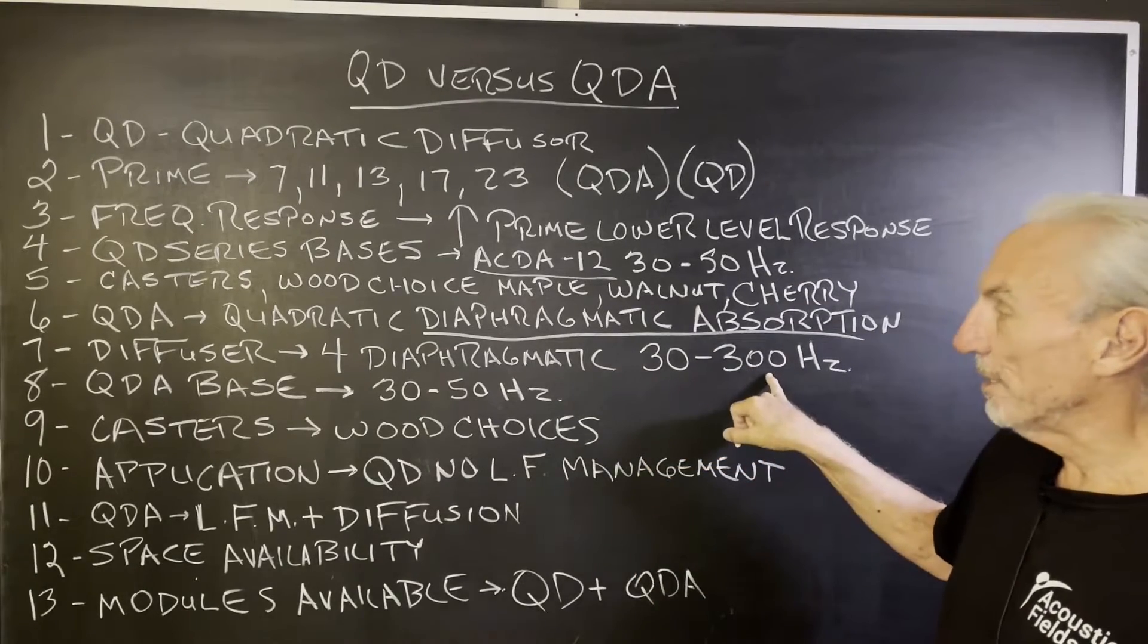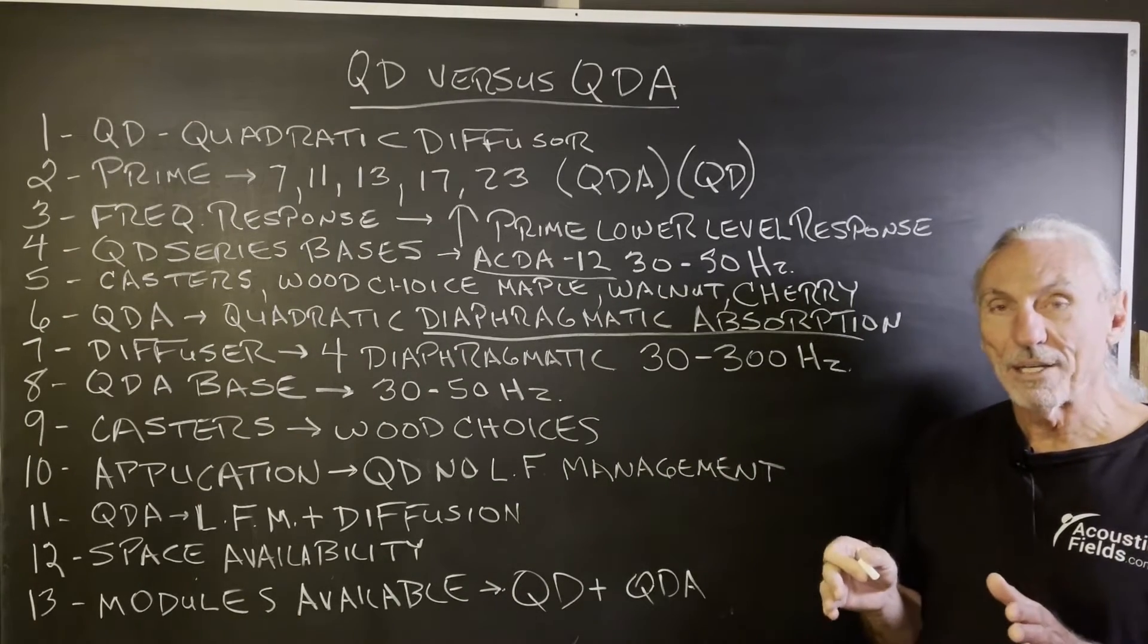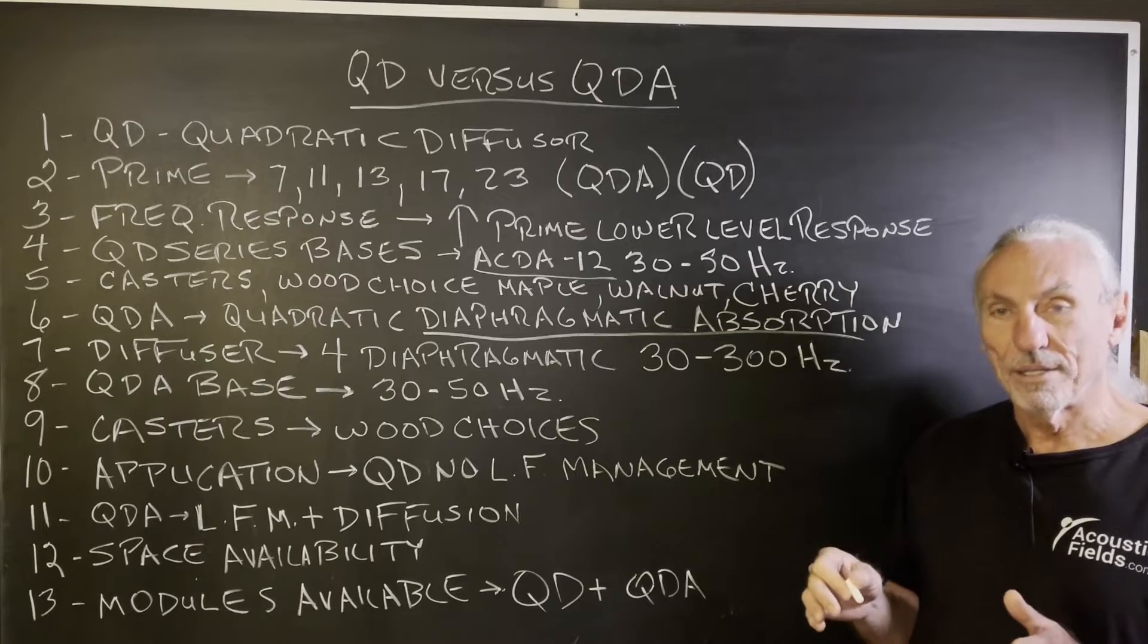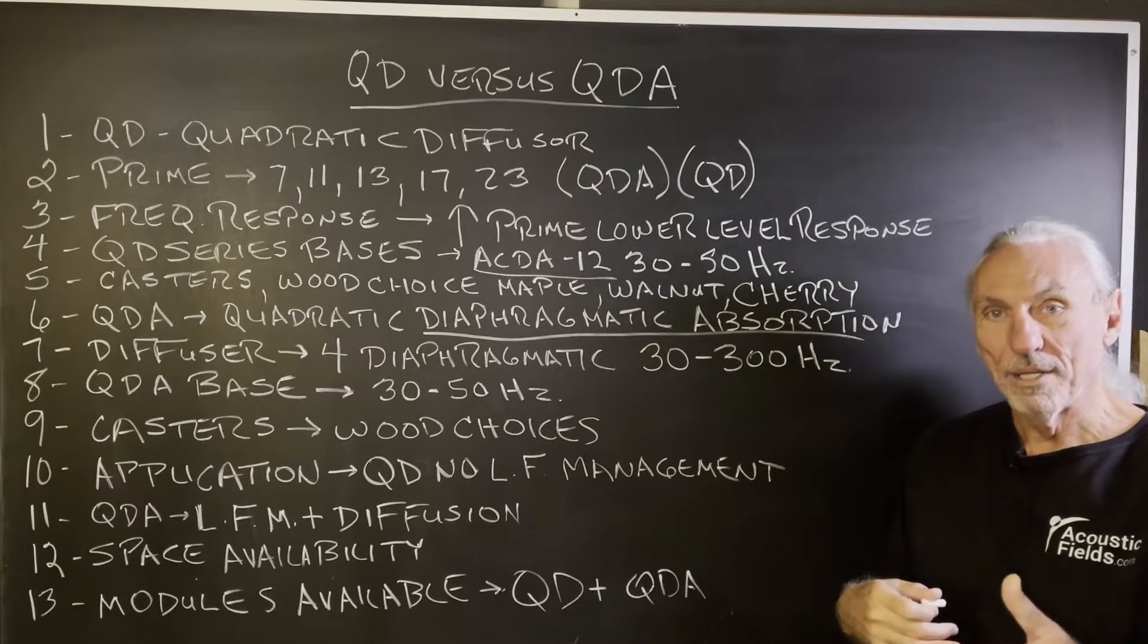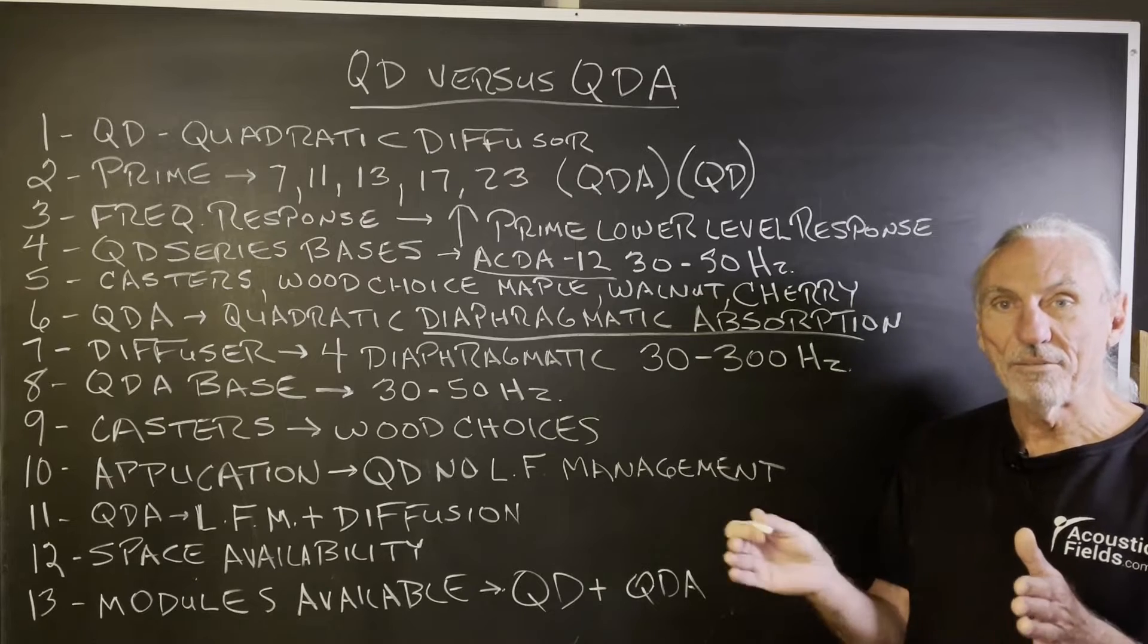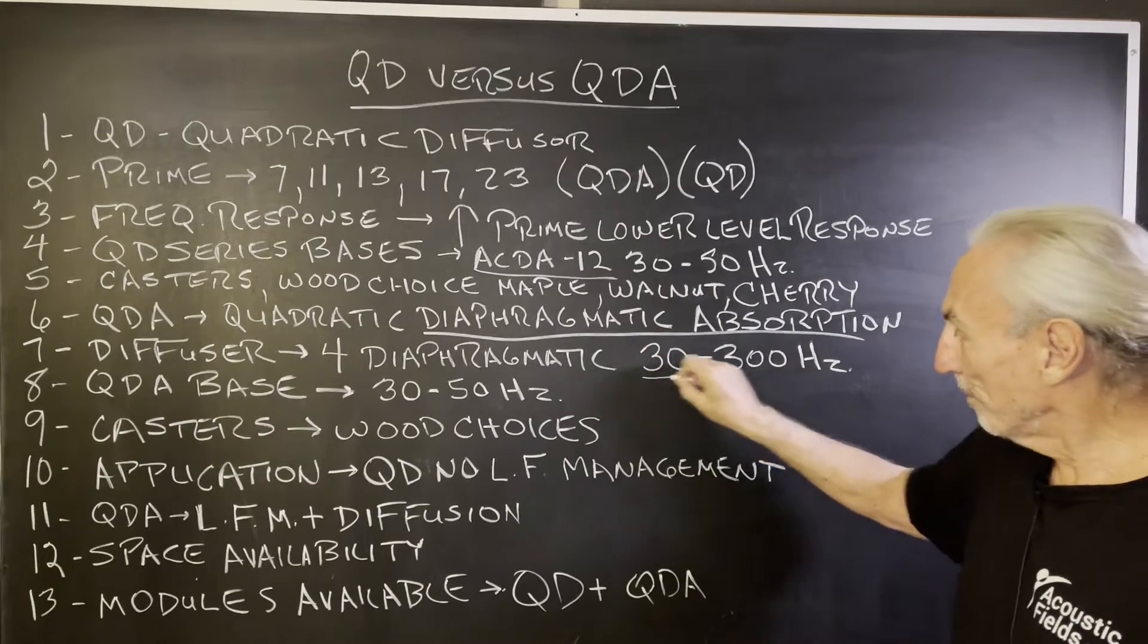So we have 30 to 300 inside the diaphragmatic absorber, because if you look inside a diaphragmatic or a quadratic diffuser, it's a series of wells. They have depth. So we strengthen the density of each of the wells that are deep enough to support diaphragmatic absorption.